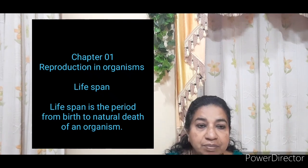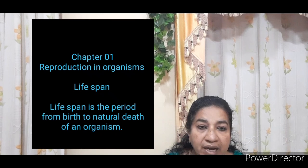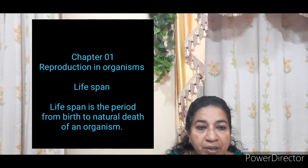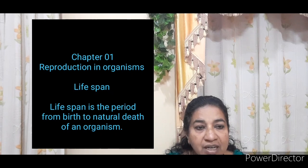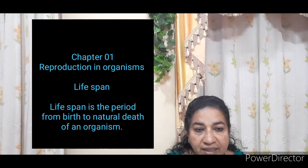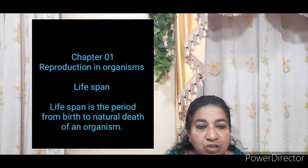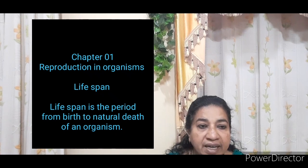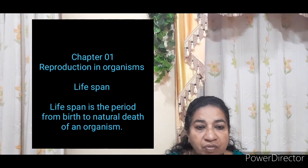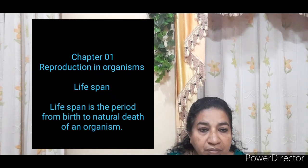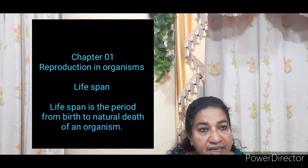In this chapter, first we have to discuss about the lifespan of an organism. Each and every organism can live only for a particular period of time — that means from birth to death. The period from birth to the natural death of an organism represents its lifespan. We will consider only the natural death.